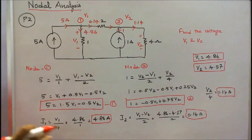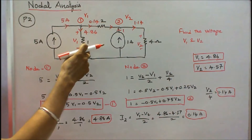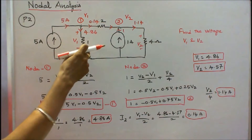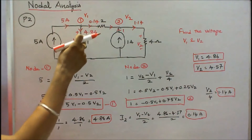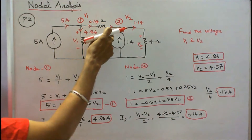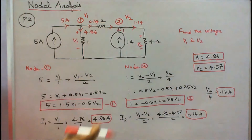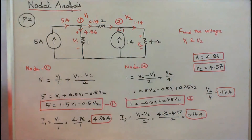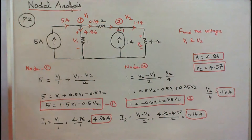Now I will verify Kirchhoff's current law. The current source is 5 amps. Current through the 1 ohm resistor: I1 equals V1 by 1, which is 4.86 amps. Current through the 2 ohm resistor: 5 minus 4.86 equals 0.14 amps. Adding the 1 amp source: 0.14 plus 1 equals 1.14 amps. Current through the 4 ohm resistor: V2 divided by 4 equals 4.57 divided by 4, which equals 1.14 amps. Kirchhoff's current law is verified.